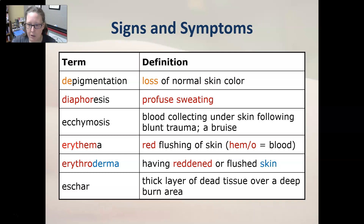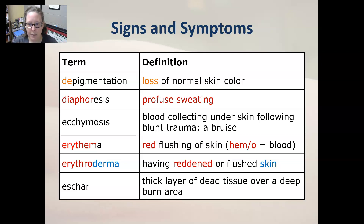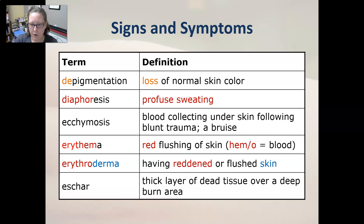Erythema is a red flushing of the skin — redness of the skin. 'Erythro' is red and 'hema' for blood, so with blood coming to the surface of the skin it turns red. Erythroderma is having reddened or flushed skin. Eschar is a thick layer of dead tissue over a deep burn area — it usually looks black.